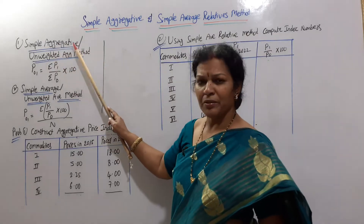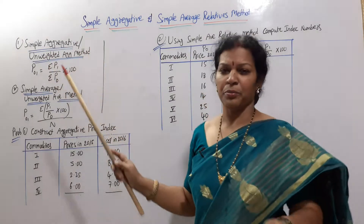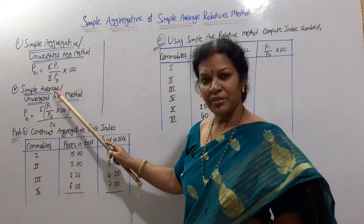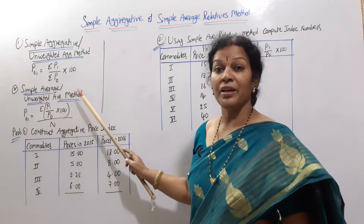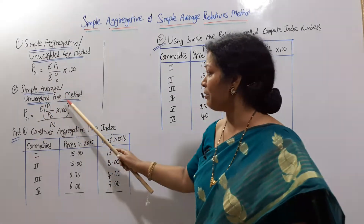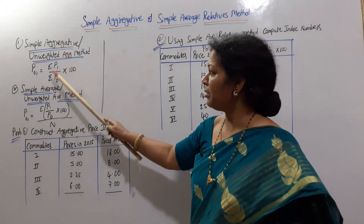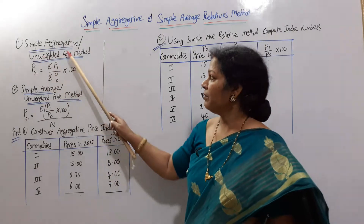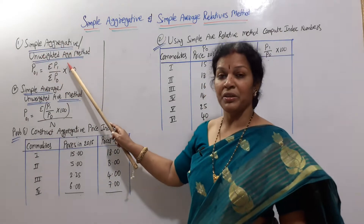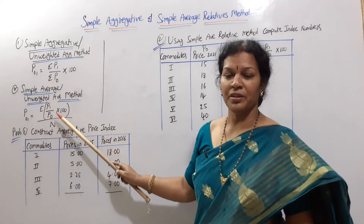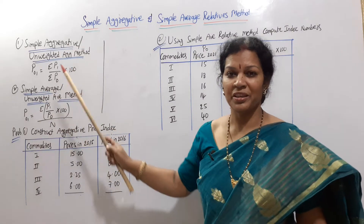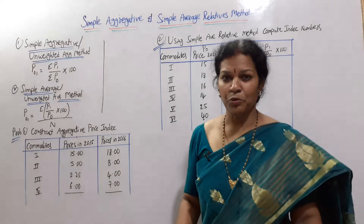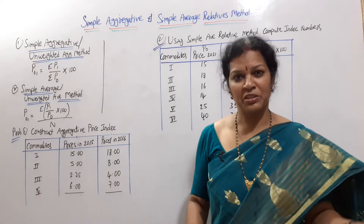The two unweighted sub-methods are: simple aggregative method and simple average method. These are two different methods. Aggregative means total. Average means arithmetic mean — we use the mathematical average.